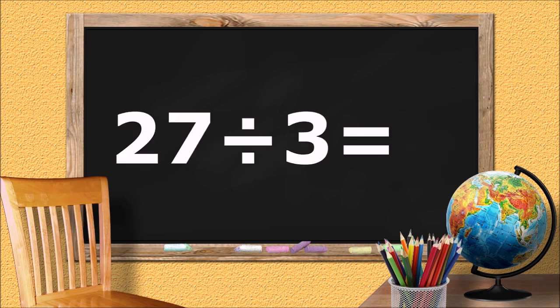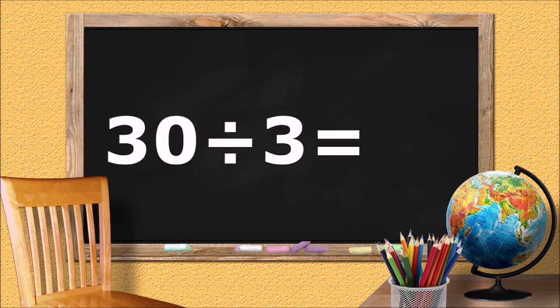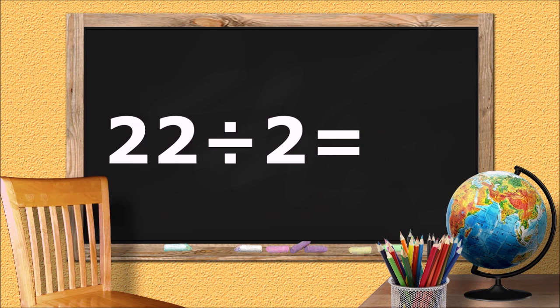27 divided by 3 equals... 9. 30 divided by 3 equals... 10.